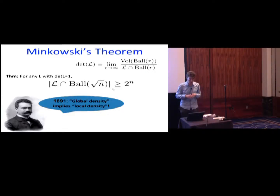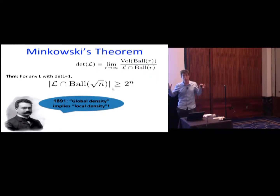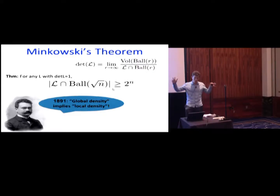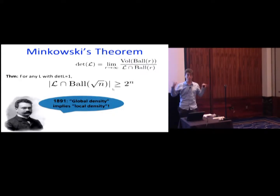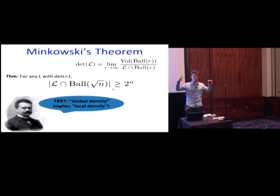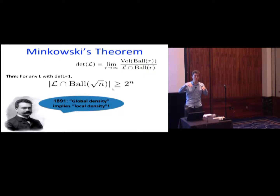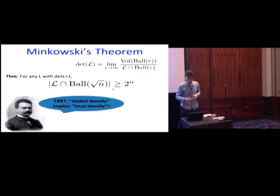Determinant is a measure of the global density of the lattice — the volume occupied by each lattice point. Going back about a century, Minkowski said, around 1890: take any lattice with determinant one. Once you take a ball of radius √n, you're going to see lots of lattice points — in fact, 2ⁿ lattice points. So if you know globally there's one lattice point per unit volume, Minkowski tells us you're going to see it within a radius of √n. Lots of work in sphere packing tries to find lattices that minimize this number, because few short vectors is considered a good code.